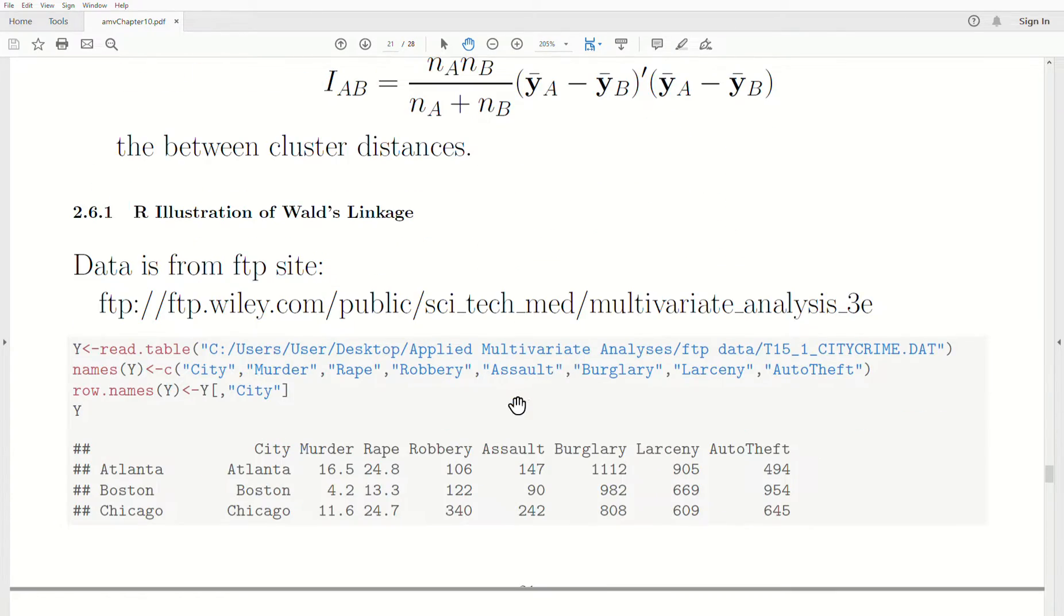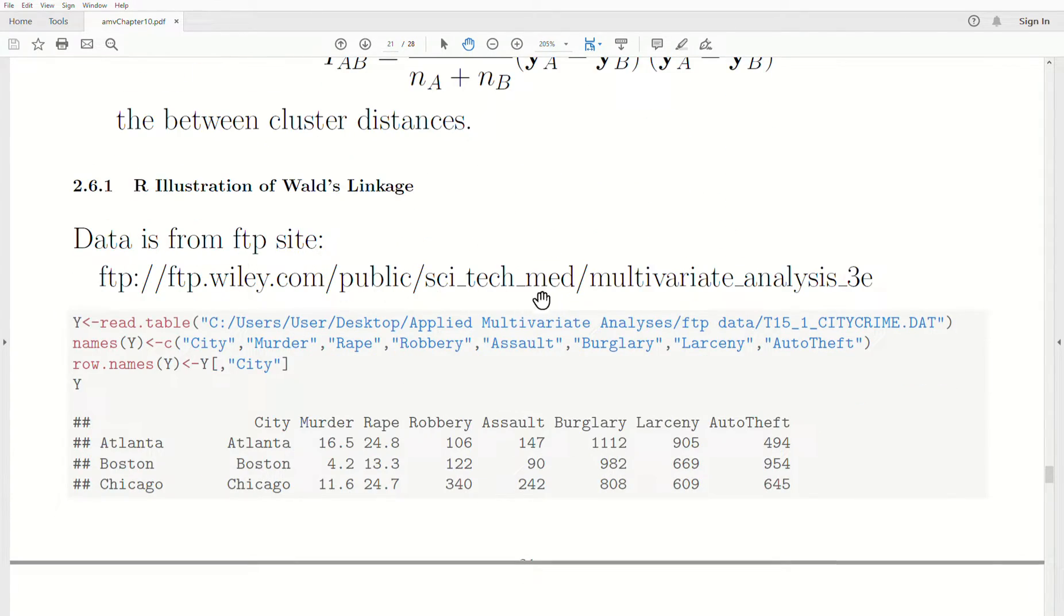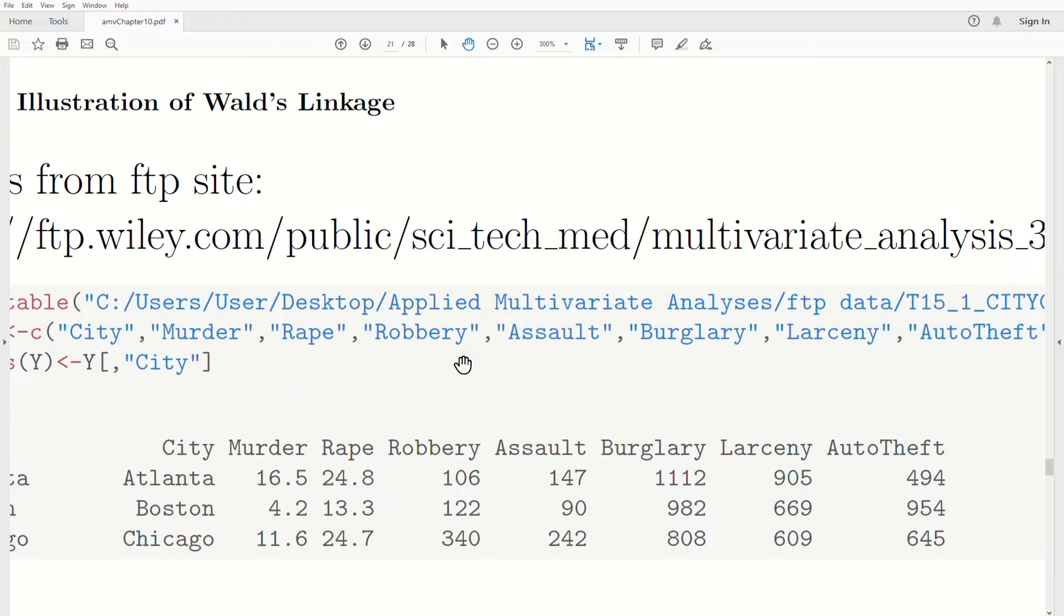Let's illustrate this using R. The data is from an FTP site here, and we're using city crime data.